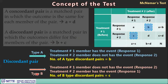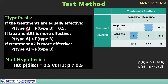We analyze Type A and Type B using McNemar's test by considering their probabilities. The probability of cell b is b/(a+b) and probability of cell c is c/(c+b), computed row-wise. We test whether these probabilities are equal. If equal, the two treatments are equally effective; if one is greater, one treatment is more effective than the other.